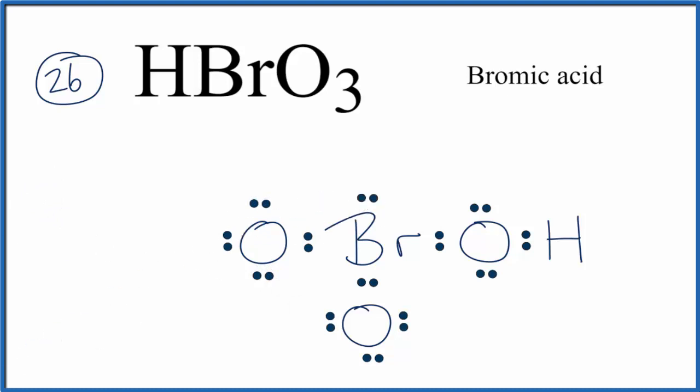And at this point, it looks like a pretty good Lewis structure. Everything has 8 valence electrons, except the hydrogen, which only needs 2. So we've fulfilled the octet rule for the oxygens and the bromines. However,